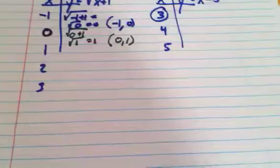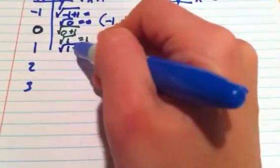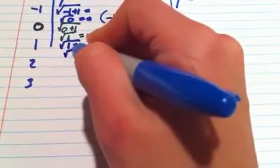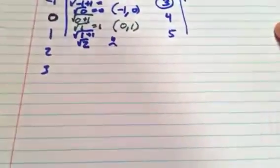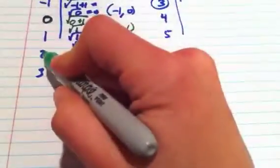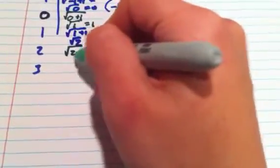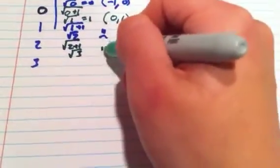Plugging in a 1, I'll have the square root of 1 plus 1, which is the square root of 2, which is not very nice. I'm not going to worry about him. Plugging in a 2, I'll have the square root of 2 plus 1, which is the square root of 3, which is not very nice. I'm going to not worry about him.